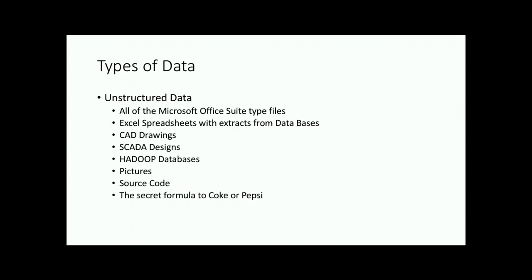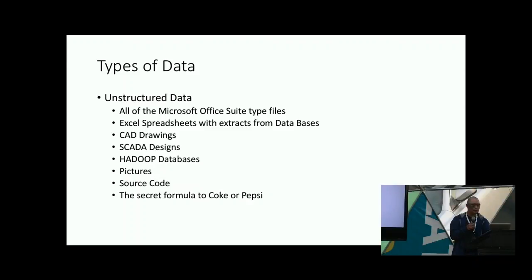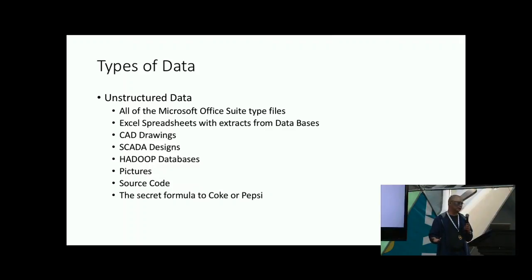The hardest type is unstructured data — anything you can create on one of these personal machines. We've got Hadoop databases, pictures, source code. Source code is damn near impossible to detect and I would never try to do any data loss prevention without using tagging. When you use DLP and try to use the algorithm for source code — which is crap — it's usually done on an endpoint, and it causes your developers too much grief and they can't get their work done. But if I have a tag I can look for on the network, the classified tag, I can actually find that source code real quick.